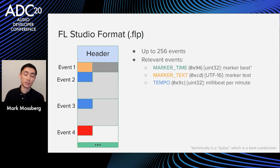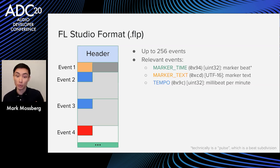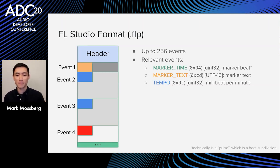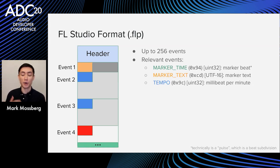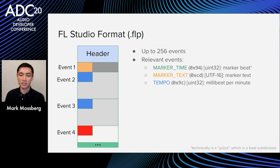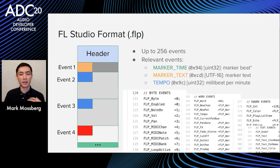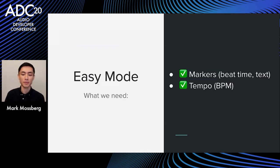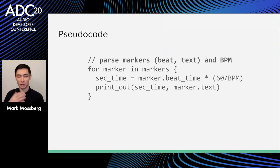All events start with a one-byte unsigned 8-bit ID from 0 to 255. Depending on where that int falls in the range, the parser knows how many bytes to read after it — an 8-bit int, 16-bit int, 32-bit int, or variable length data. There are up to 256 separate event types. The three specific events we need are: marker time (hex 0x94) — a 32-bit int with the marker beat; marker text (hex 0xCD) — a UTF-16 encoded string; and tempo (hex 0x9C) — a 32-bit int in millibits per minute. That's actually all we need for easy mode.